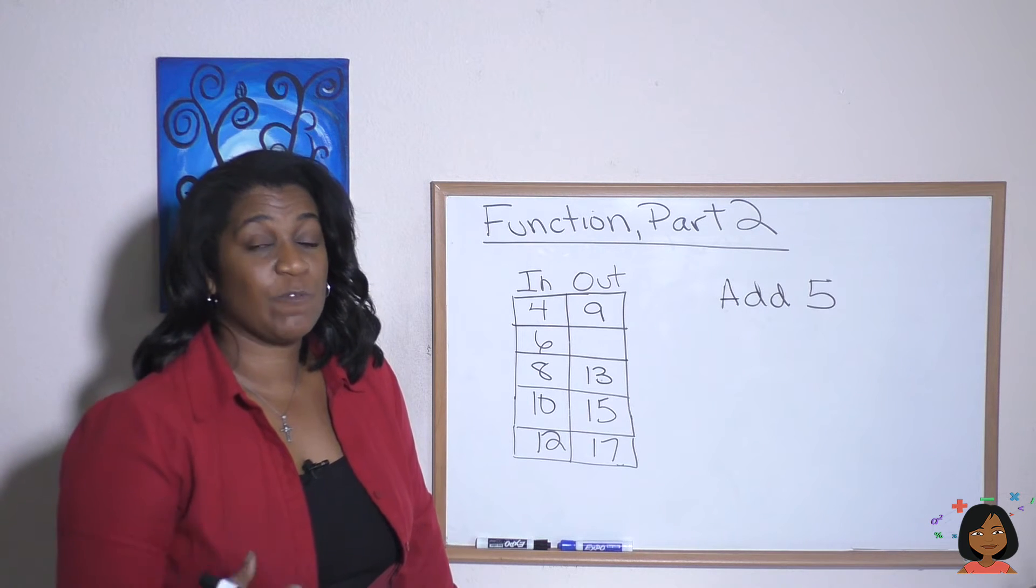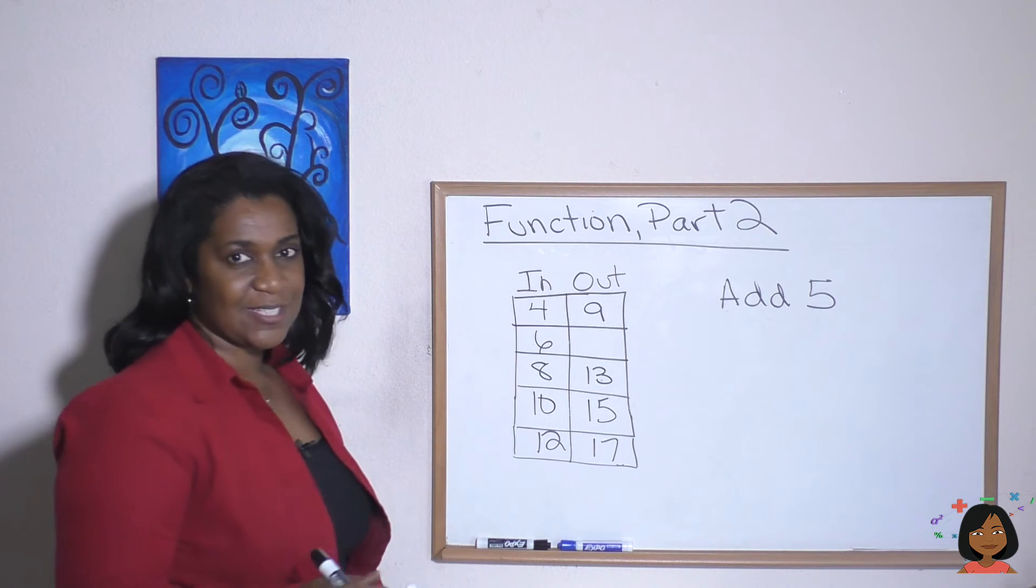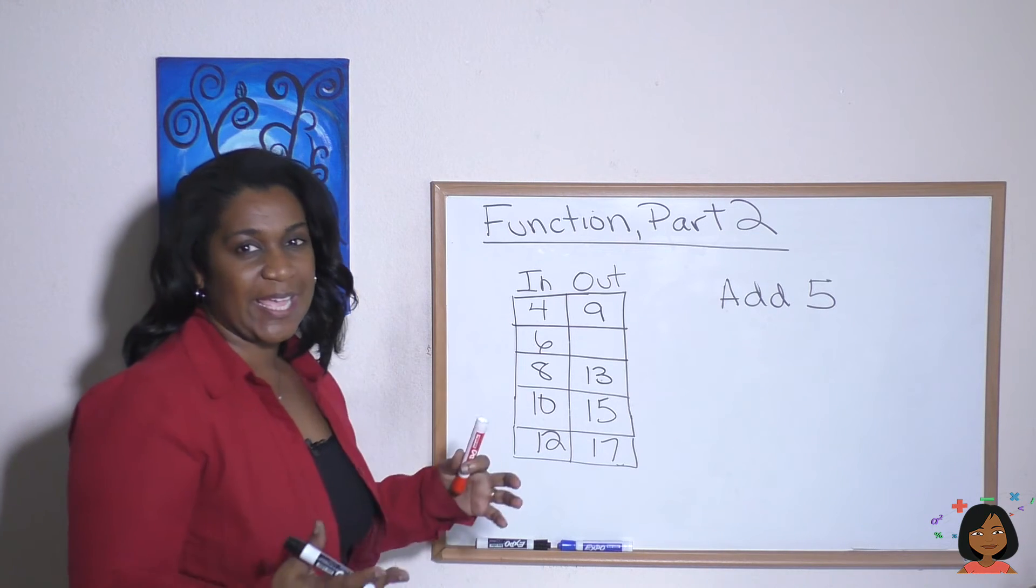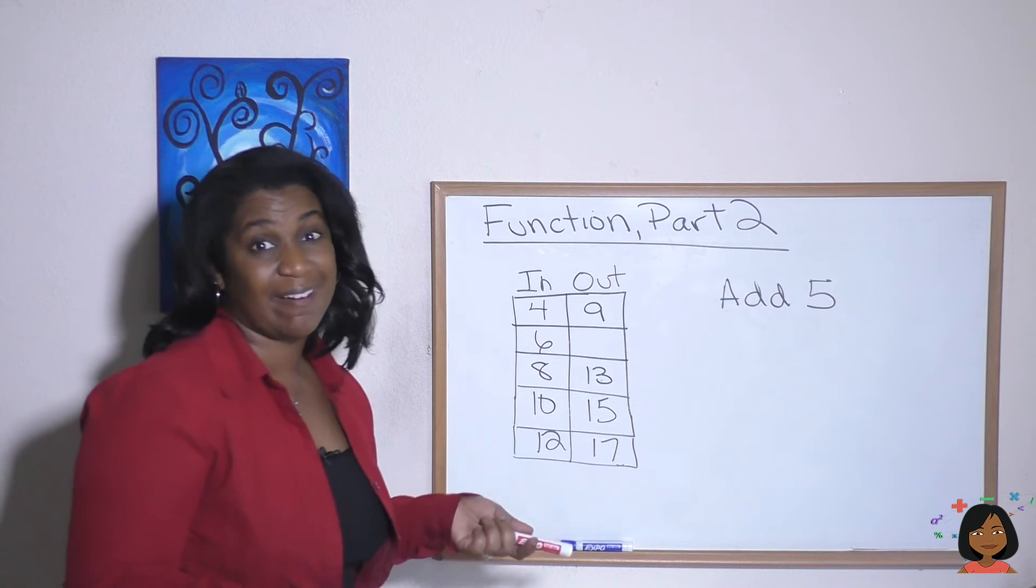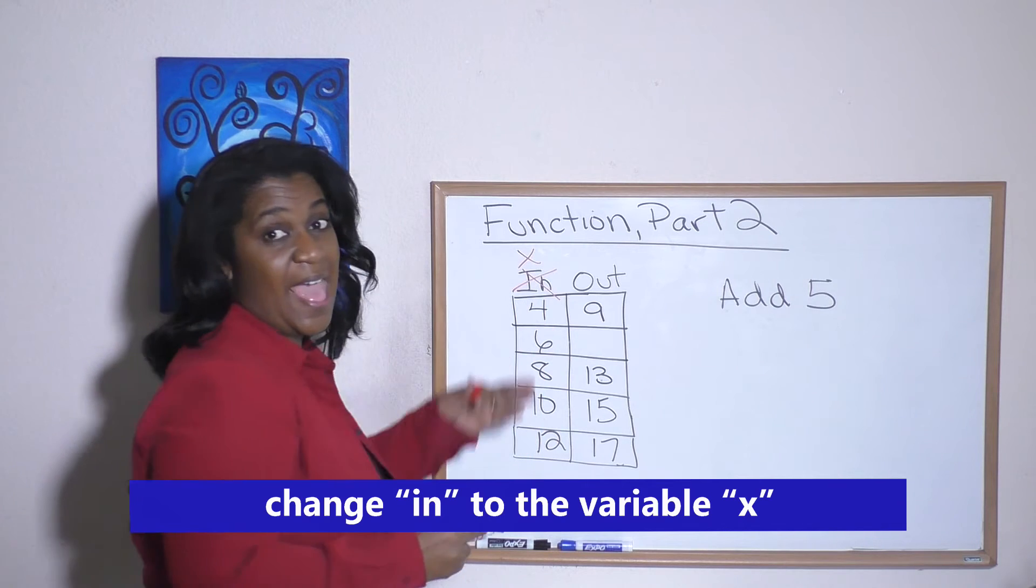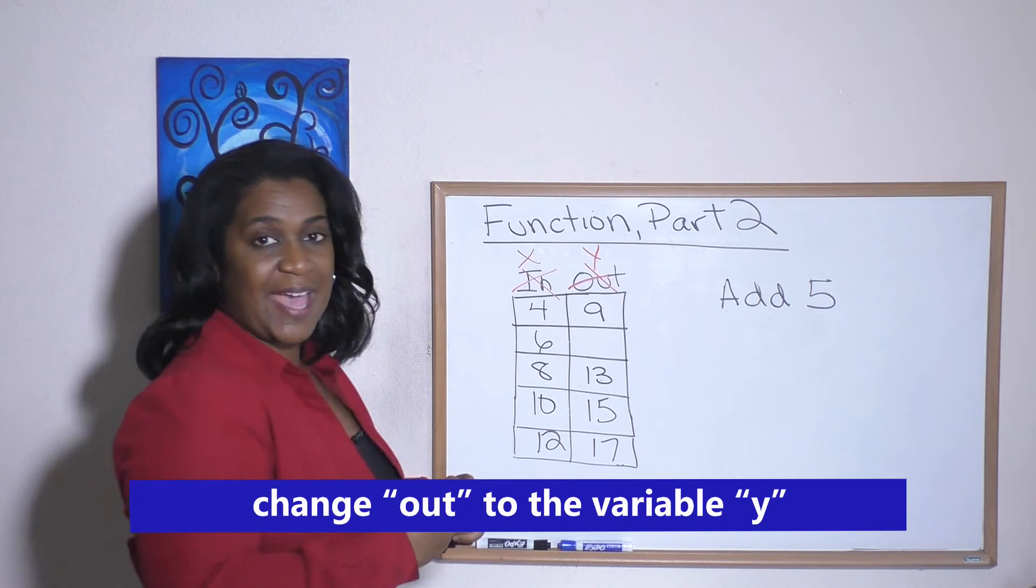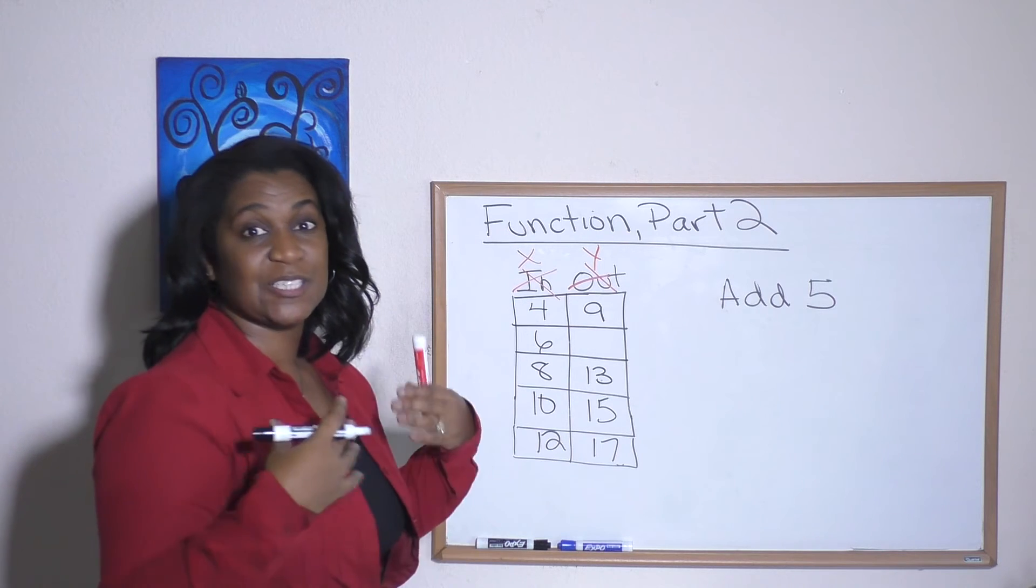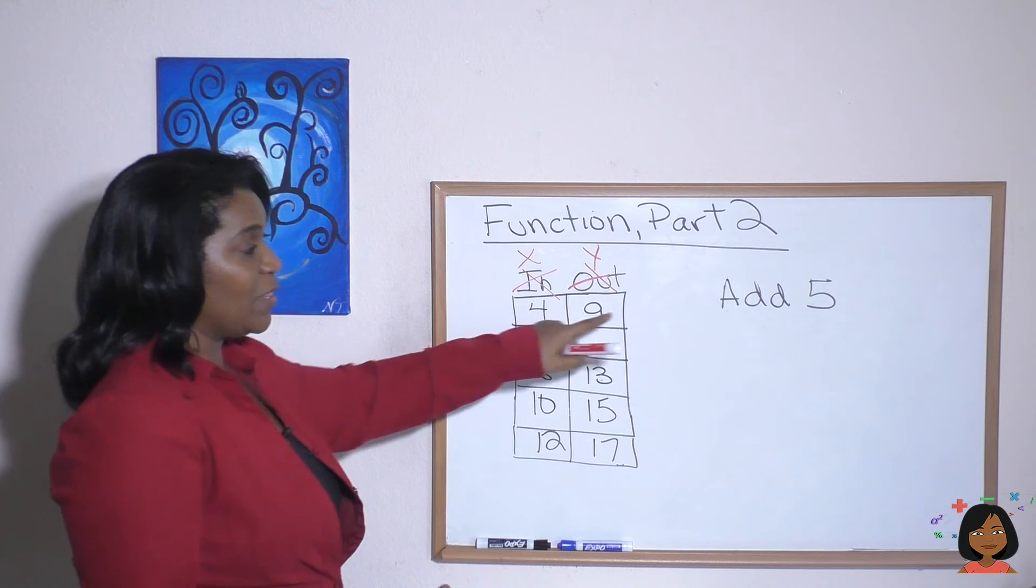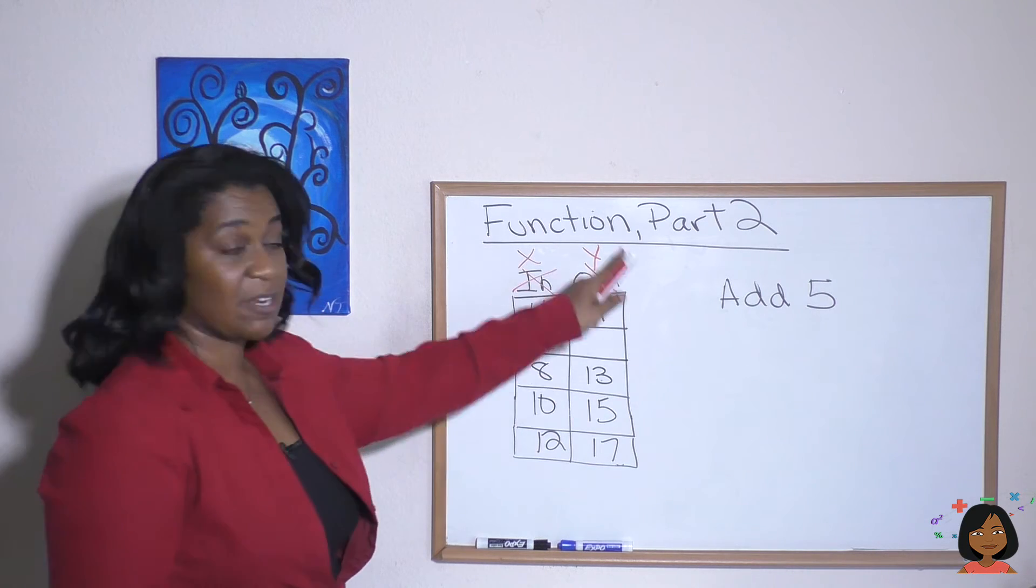You've probably noticed that we're moving more and more towards algebra. So it actually takes over here nicely. Instead of using the word in, we could change that to a variable. We could call that in X and the out we could call Y. And instead of using in and out, we can actually write an equation to tell us about this rule. So we knew that if we added five to our in column, it would give us our out column.